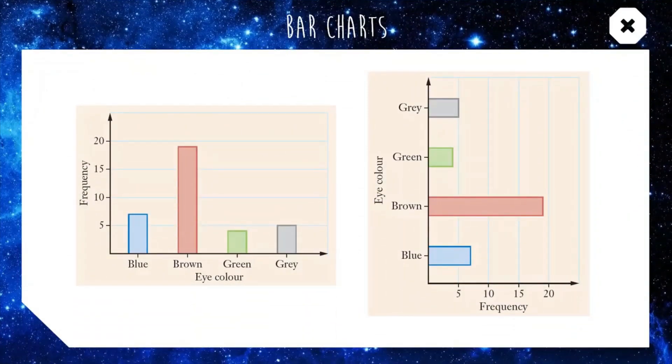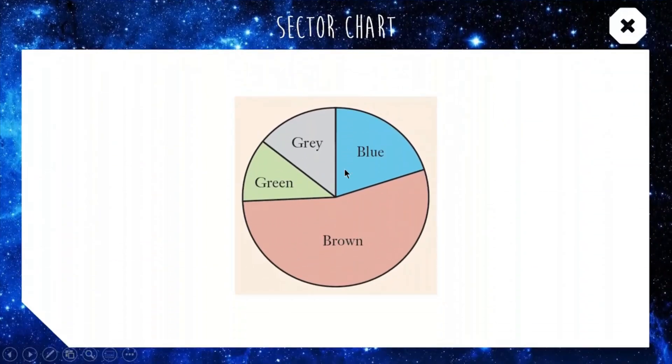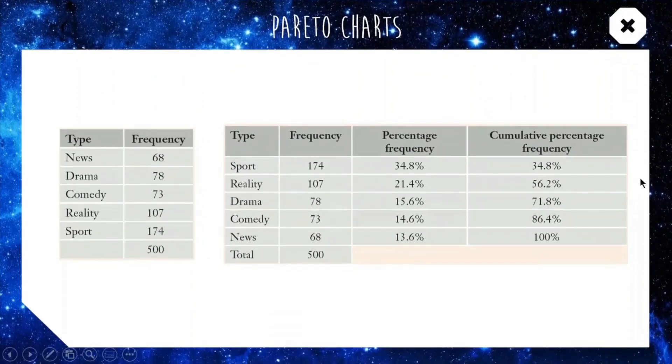We can do bar charts which are different from histograms. Bar charts are typically for categorical data which is why we have gaps now because they're not numbers. You know what a bar chart is, frequency number of times pretty straightforward. Sector graph again one I'm hoping you're familiar with, the size of the sector represents the frequency so in this case brown would be a bit over half the data set and you can construct these by having angle sizes for your sectors that represent the proportion of the data set.